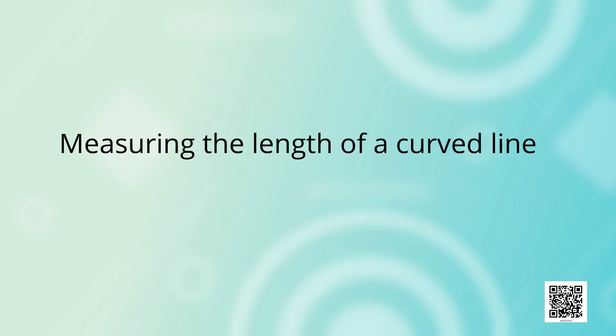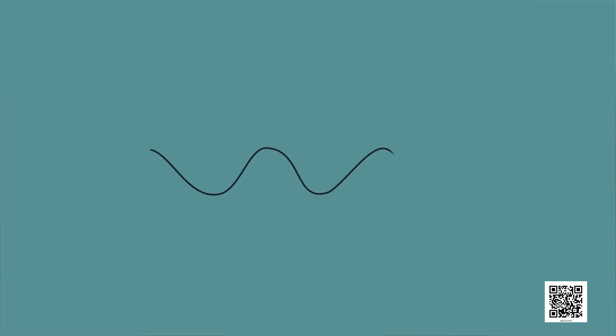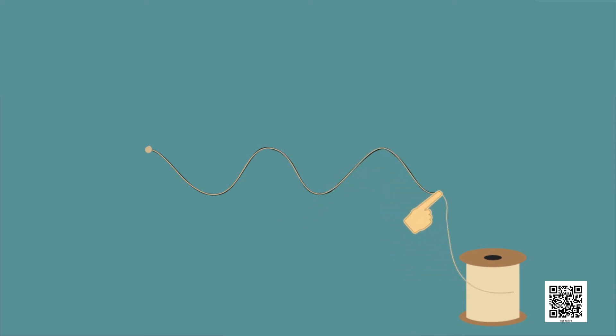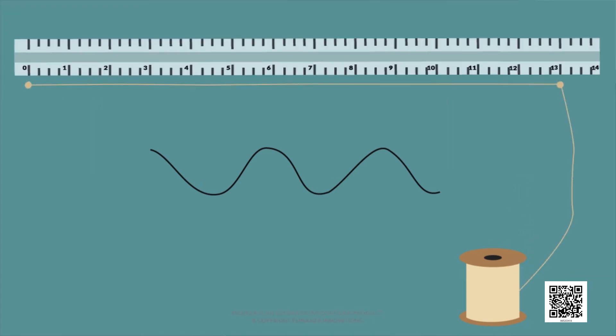Measuring the length of a curved line. We cannot measure the length of a curved line directly by using a meter scale. We can use a thread to measure the length of a curved line. Put a knot on the thread near one of its ends. Now place a small portion of the thread along the line, keeping it taut using your fingers and thumb. Hold the thread at this end point with one hand. Using the other hand, stretch a little more portion of the thread along its curved line. Go on repeating this process till the other end of the curved line is reached. Make a mark on the thread where it touches the end. Now stretch the thread along a meter scale. Measure the length between the knot in the beginning and the final mark on the thread. This gives the length of the curved line.